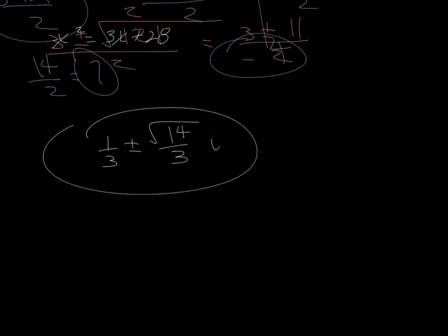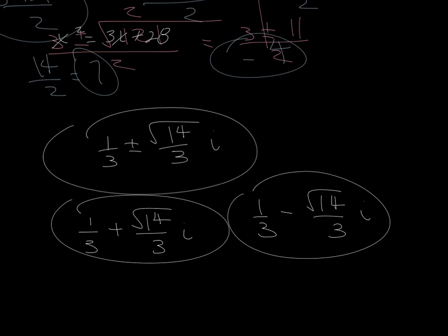Notice, we still have two answers. We have 1 third plus the square root of 14 over 3i and 1 third minus the square root of 14 over 3i. So I get two answers.